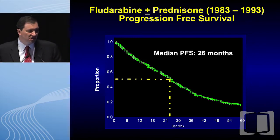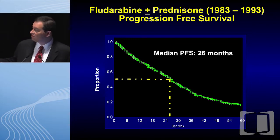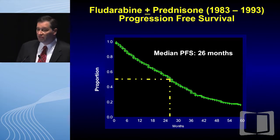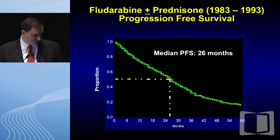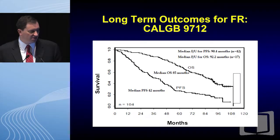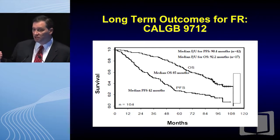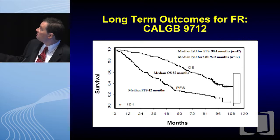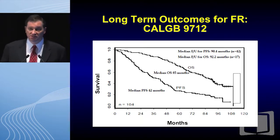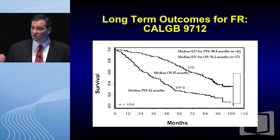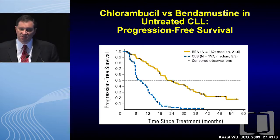First, taking a look at fludarabine plus or minus prednisone — these are data from ancient history by our current standards — you can see a median progression-free survival of 26 months with standard-dose fludarabine. This sets the stage for what we are looking at as our goal. Then looking at long-term outcome using the CLGB 9712 study — fludarabine plus rituximab — the median progression-free survival for FR was 90.4 months, a significant improvement with the addition of rituximab.